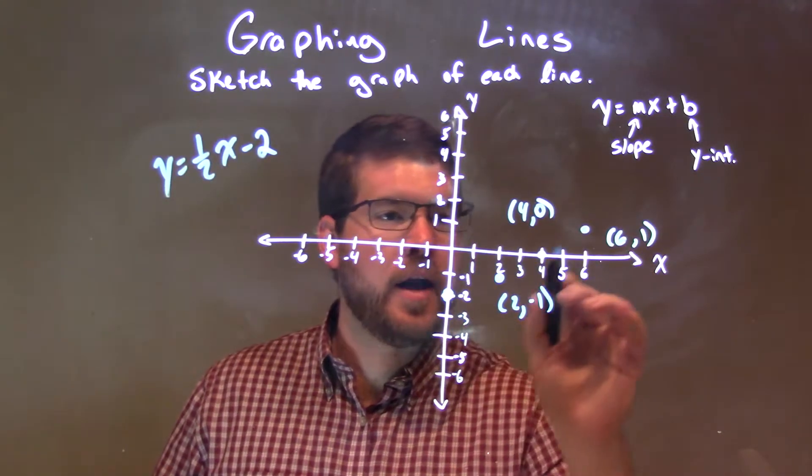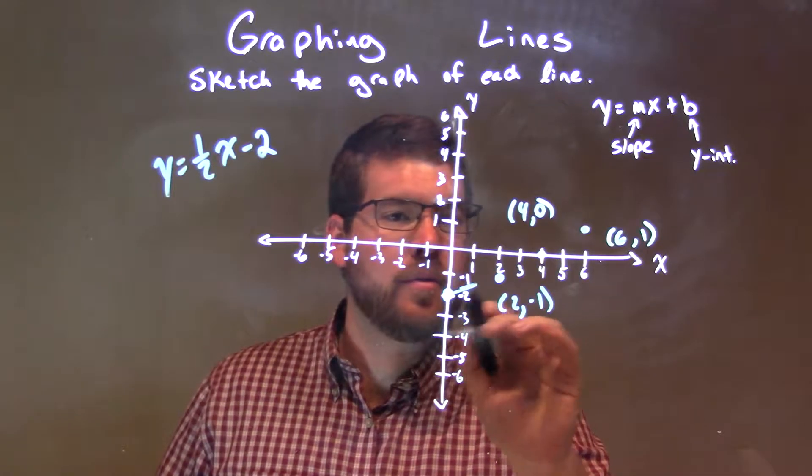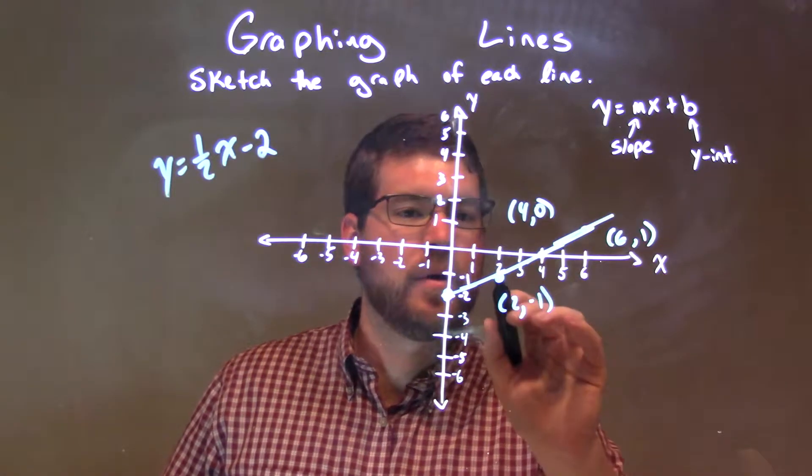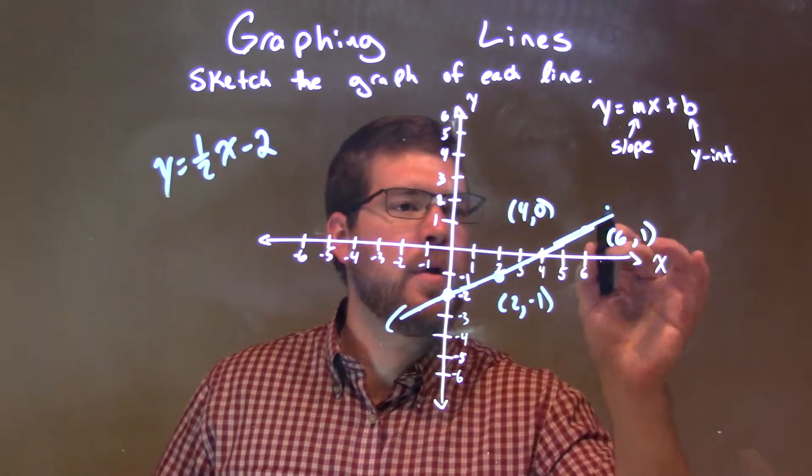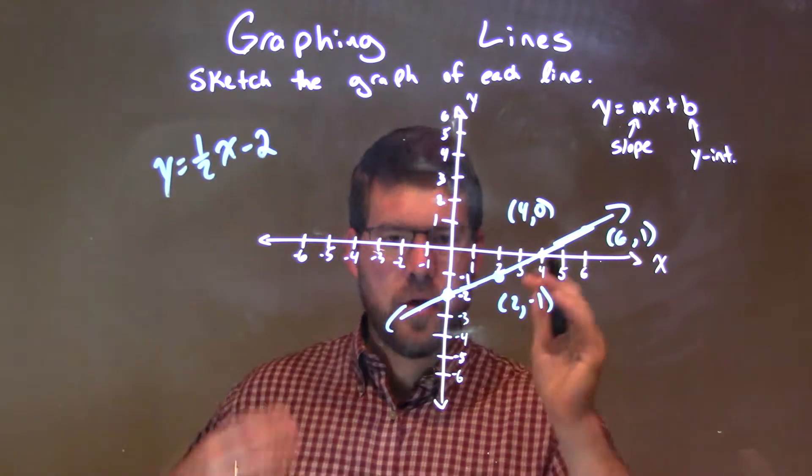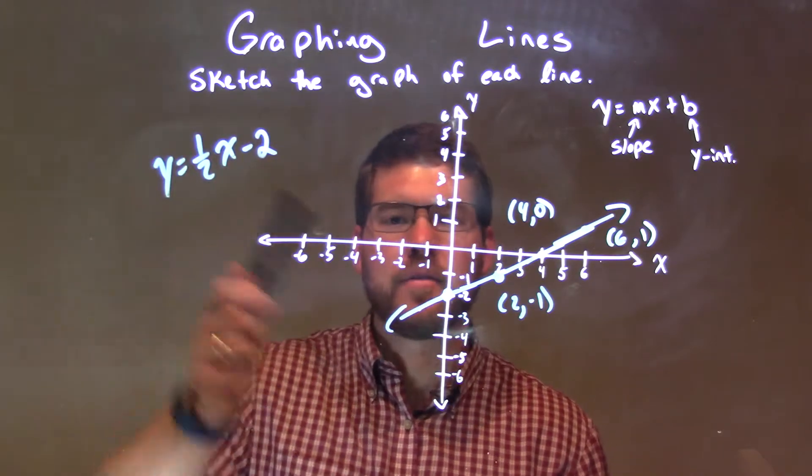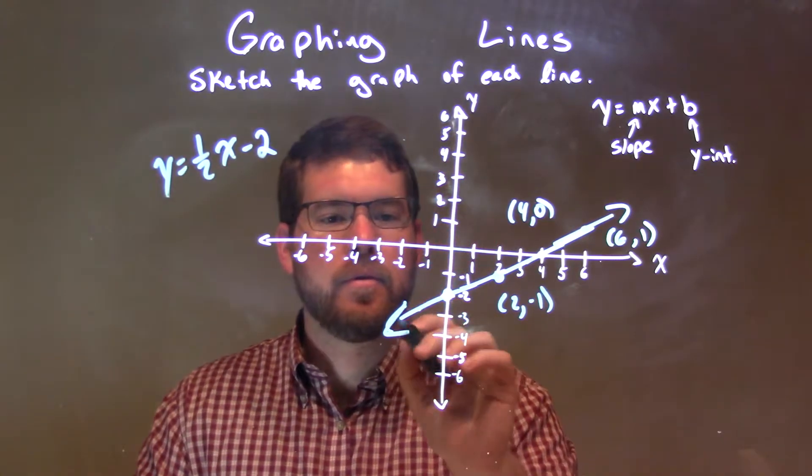So we can connect all these dots here, hopefully in a nice little manner. I know, dot here a little higher. There we go. And there we have our line that represents the equation, y equals one-half x minus two.